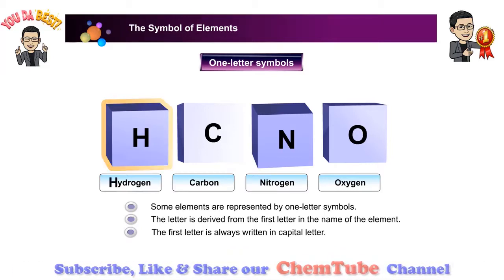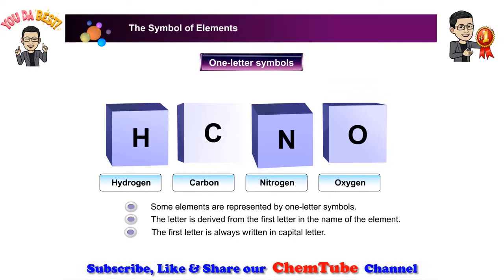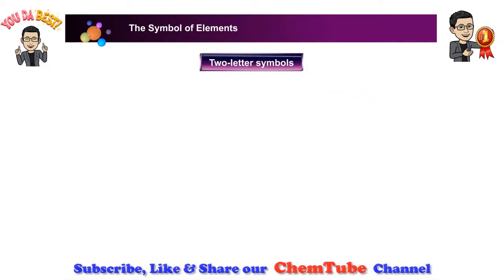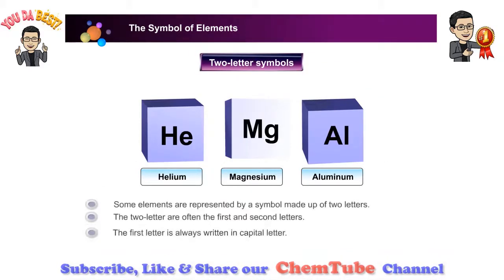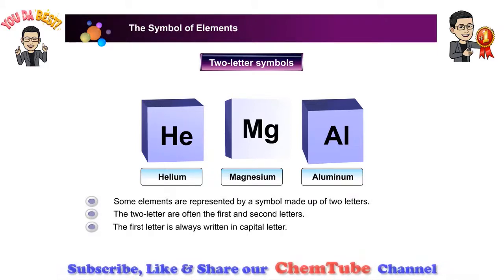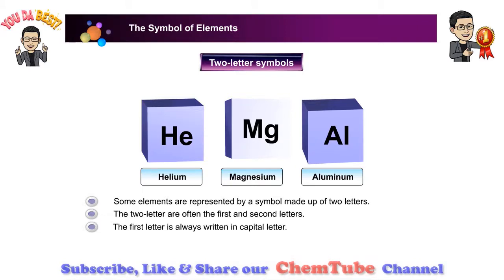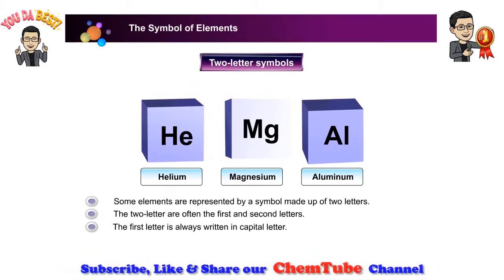The letter is always written in capital. Examples are hydrogen, carbon, nitrogen, and oxygen. Let us look at other elements which are represented by two-letter symbols. The two-letter symbols are often the first and second letters. The first letter is always written in capital. Examples are helium, magnesium, and aluminium.